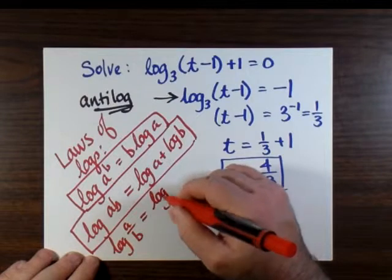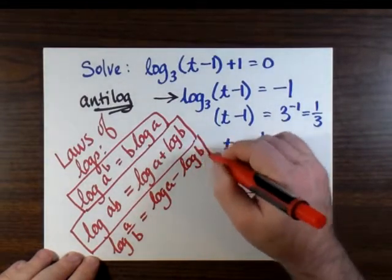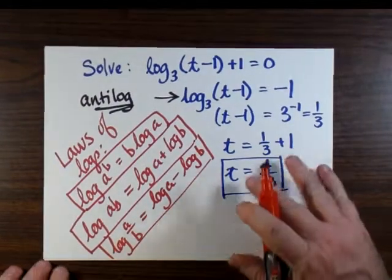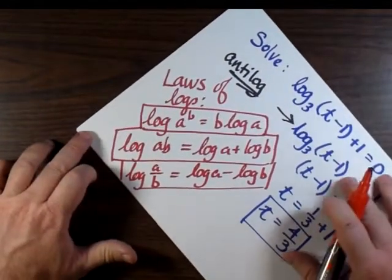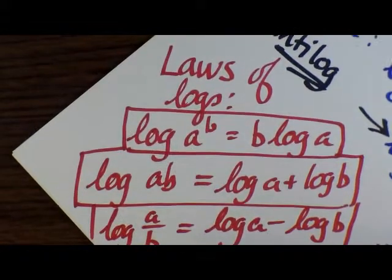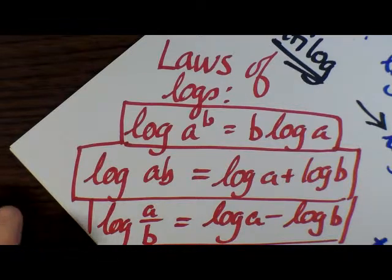And of course, along with the product law is something called the quotient law. And that's log a over b equals the difference between log a and log b. And just spend a second or two to show you that right side up.